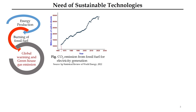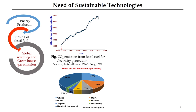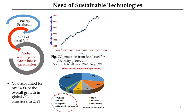If we see the carbon dioxide emission from fossil fuel for electricity generation, it is increasing with time. Here we have considered data from about 1965 with some projections. The way carbon dioxide is increasing is alarming, and we are already in a very dangerous state as we have crossed the safe limit of carbon dioxide in the earth's atmosphere, which is about 350 ppm. Looking at major countries contributing to CO2 emissions — China, India, Japan, USA, Russia, Germany — their contribution is more compared to the rest of the world. Coal accounted for over 40 percent of the overall growth in global carbon dioxide emissions in 2021.